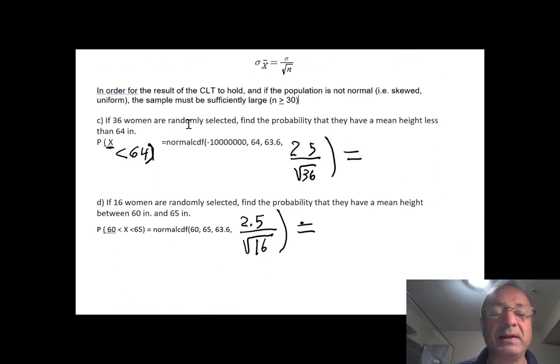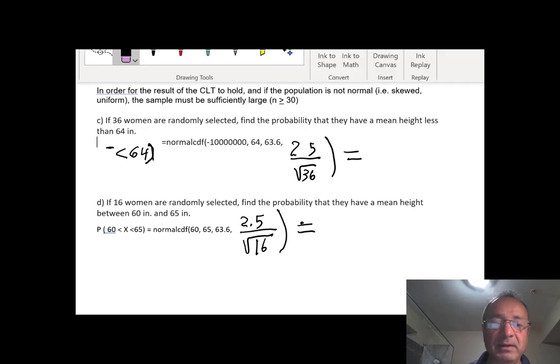If 36 women are randomly selected, find the probability that they have a mean height less than 64. So the question here, it's not about one individual. It's about the mean of the sample, so it's about X bar. So we need to find the probability that X bar is less than 64. Let me just fix this here. And I'm going to type it in.